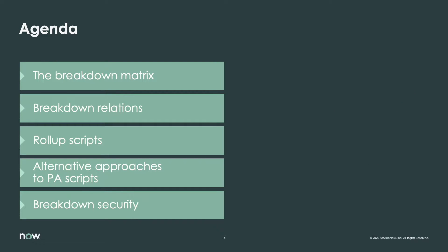The agenda for this session: we're going to take a look at first the breakdown matrix, which will be a critical piece to help us create the foundation for working with hierarchies in the performance analytics environment. Then we'll take a look at breakdown relations, another way to achieve multiple layers of breakdowns within performance analytics.